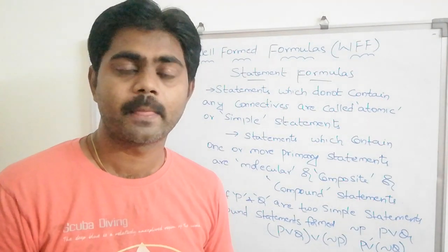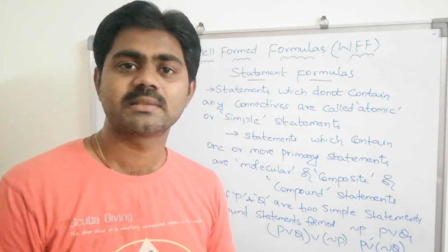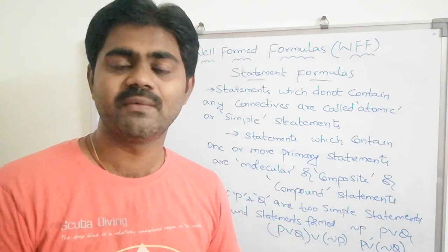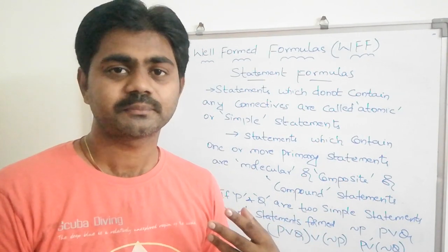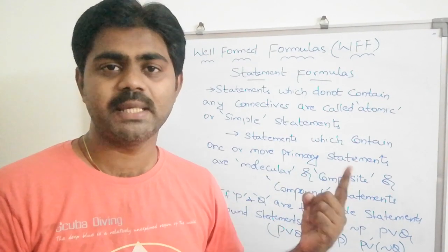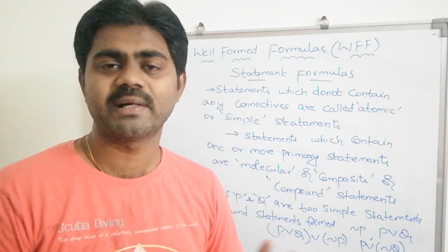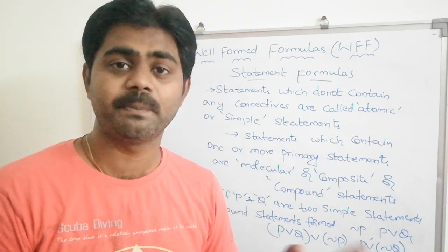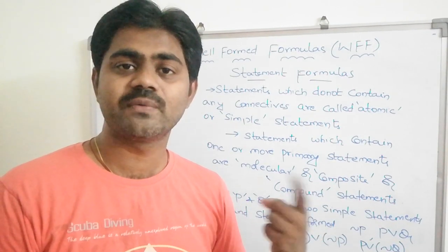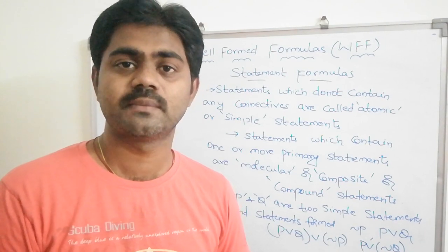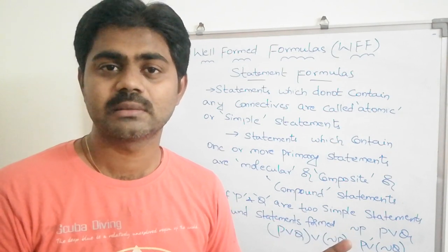Before going to the actual concept, let's understand statement formulas. We have simple statements and compound statements. Simple statements are individual statements — they stay single and do not mingle with any other. If it's a compound statement, it has a bonding with other statements. P and Q individually are simple statements, unrelated to each other. But if we connect them using connectives, that is called a compound, composite, or molecular statement.